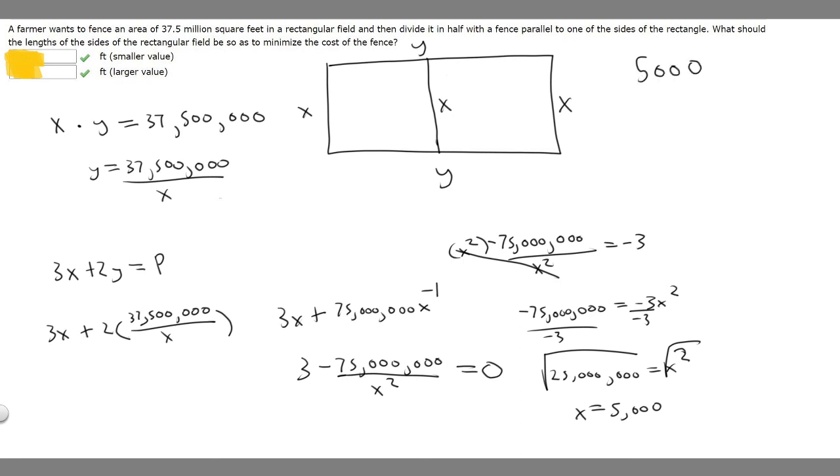So let's just take this number and plug it into this. So y is going to be equal to 37,500,000 divided by 5,000. So if you do that in your calculator, you should get that it's going to be equal to 7,500.